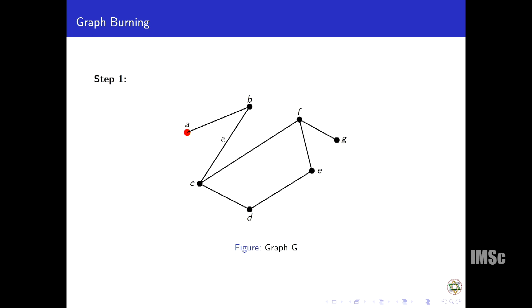In the first step only one vertex is burned, so the rest of the vertices are unburned. The black vertices are unburned and the red one is burned. In the next step, we will choose one vertex from the unburned vertices and again put fire to that. Whatever is burned in the first step, we will also burn its neighbor. So the fire is spreading to the adjacent vertices or to the neighbors.